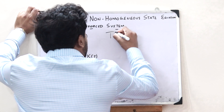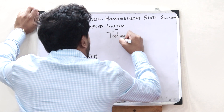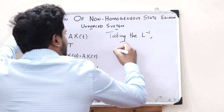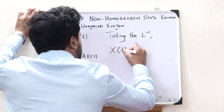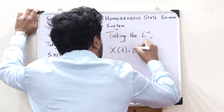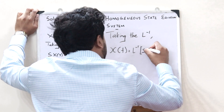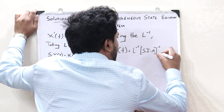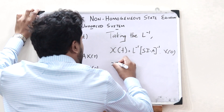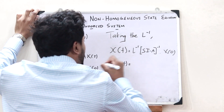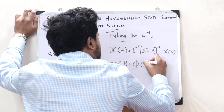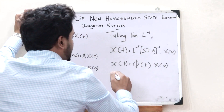Taking the inverse Laplace transform, the inverse Laplace transform of X(s) is nothing but x(t). So x(t) is equal to the inverse Laplace transform of (sI − A) inverse, multiplied by x(0). This particular term can be represented as φ(t), so x(t) = φ(t) · x(0).